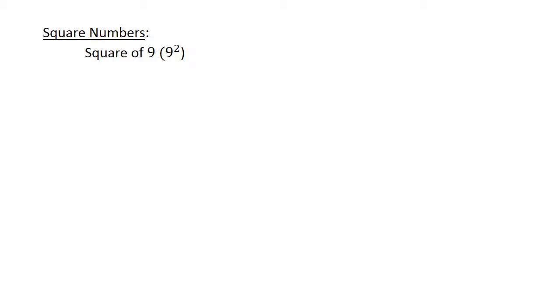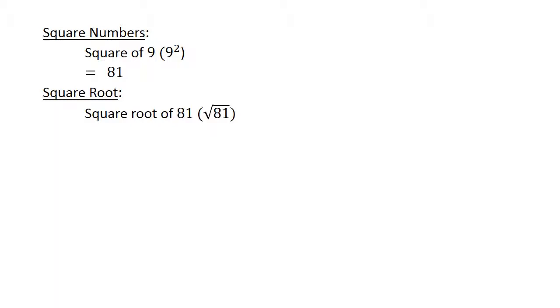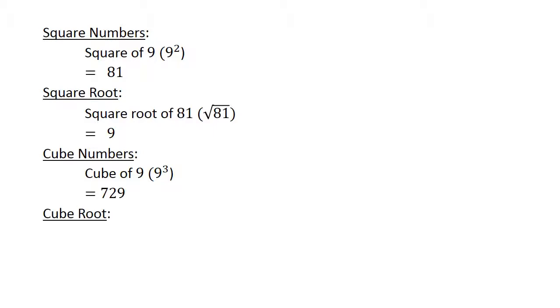Square numbers: the square of 9 equals 81 (9 times 9). The square root of 81 equals 9. The cube of 9 equals 729, and the cube root of 729 equals 9.